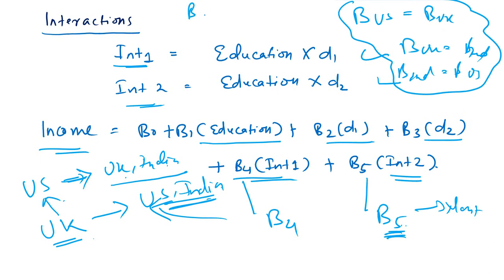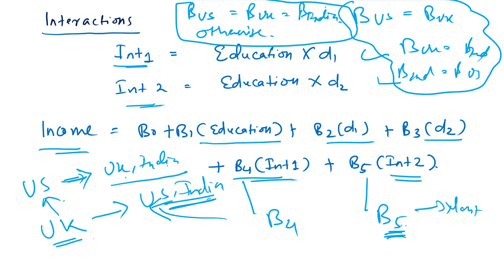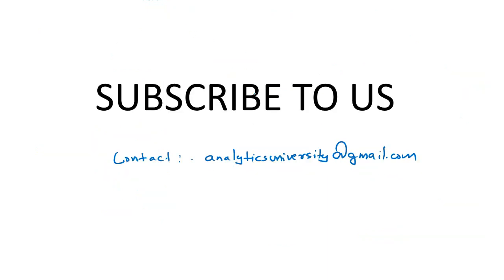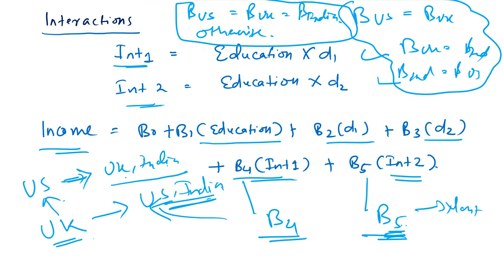The correct null hypothesis is: beta of US = beta of UK = beta of India, with the alternative being otherwise. Either both interaction coefficients will be significant or both will be insignificant, making interpretation easier. The alternative hypothesis means at least one group differs from the others. This approach can be extended to four, five, or more groups, though interpretation becomes more complicated as the number of groups increases.